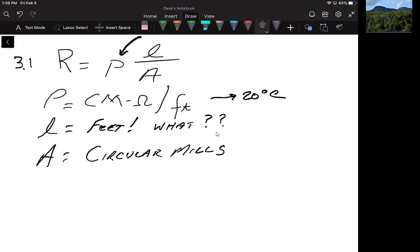That would be determined in a lab and for copper, it comes out to be, and copper is the one that we will of course encounter the most, it comes out to be approximately 10.3. And then the units, the units are what I want to talk to you about. So the units for resistivity, it's 10.37 at 20 degrees C, and it's measured in something called circular mil ohms per foot.